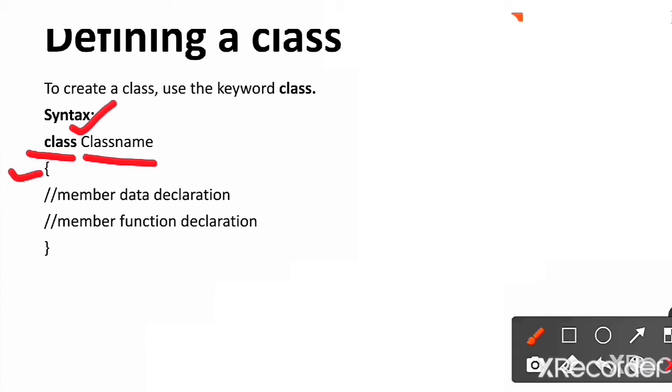Then, within this bracket, you will define the data members for this class as well as the member functions for this class. Then, you will close the bracket. This is how you define a class in Java.